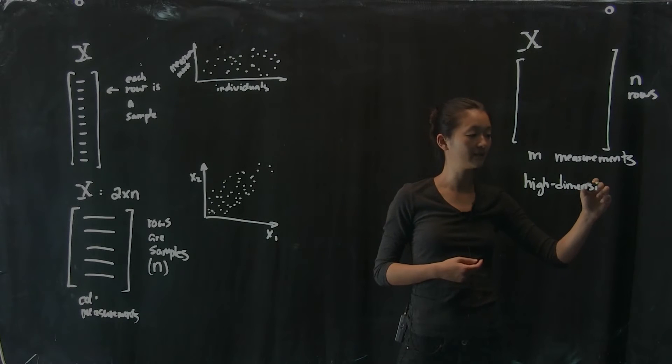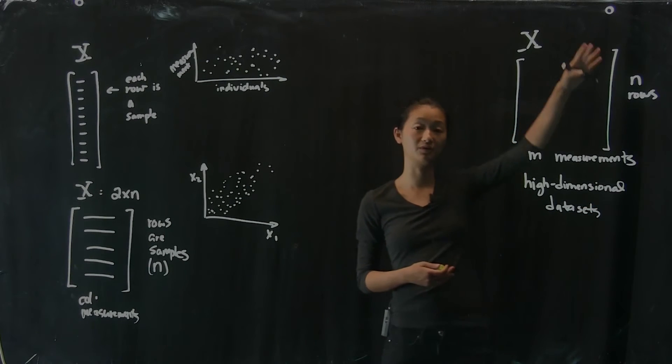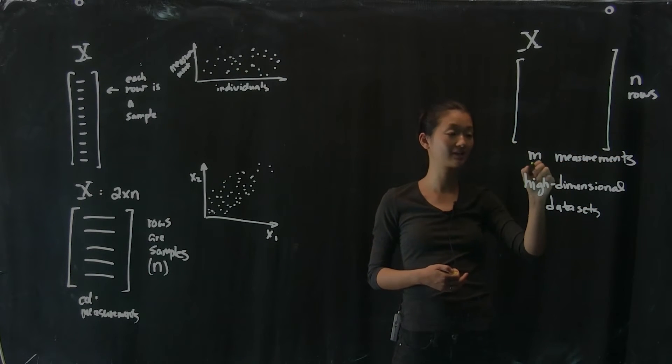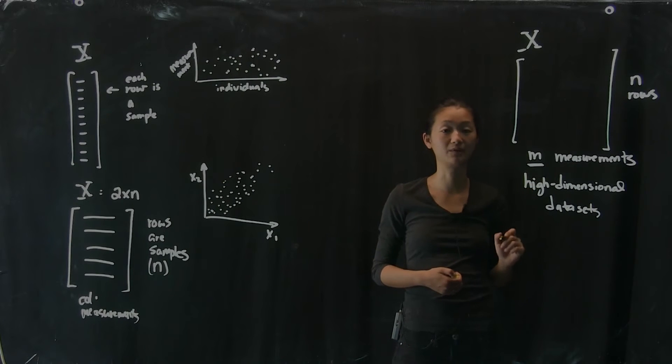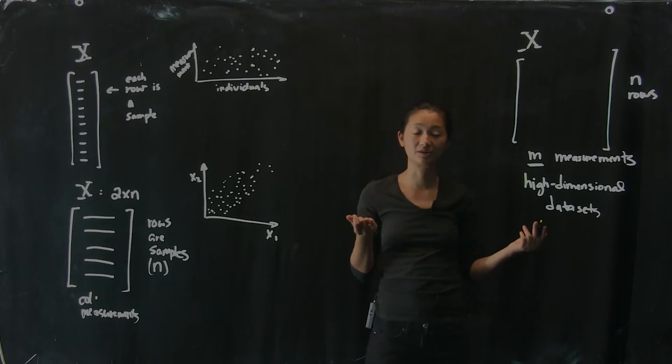And this is one of the other ways that data can get very big very fast. Not simply by having more and more individuals and more and more rows, but actually having a very large number for m. So what do I mean by dimension? Why do we call it dimension?